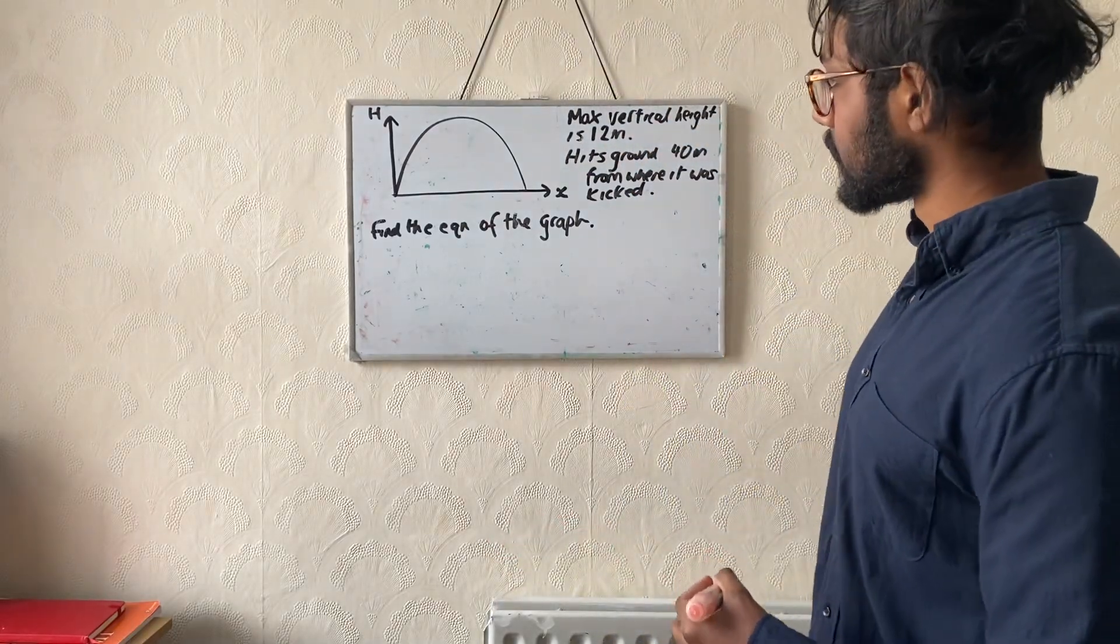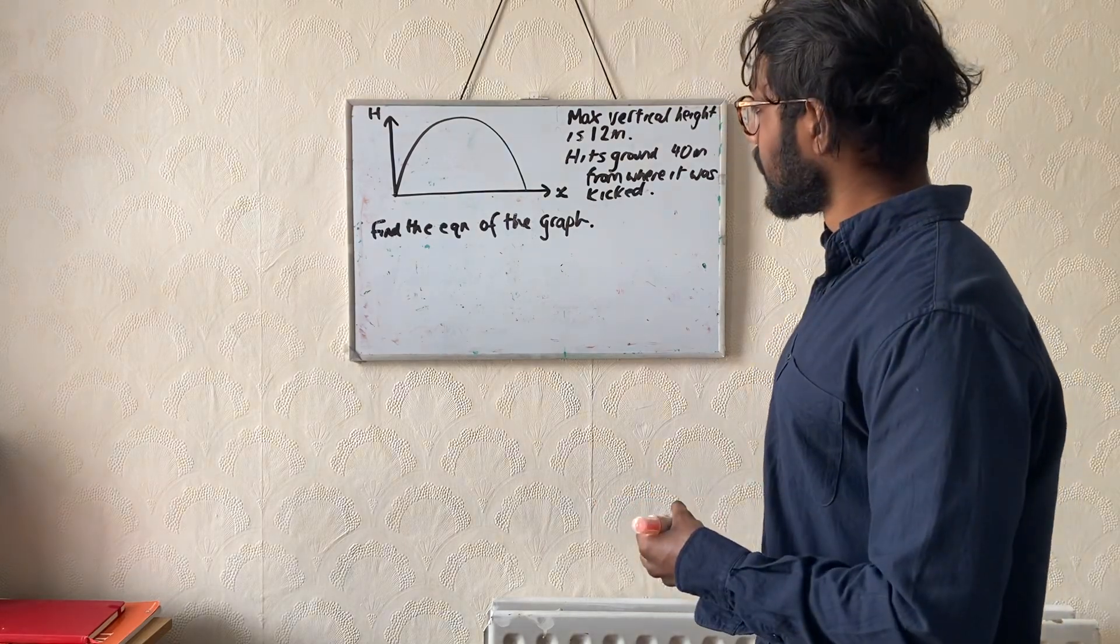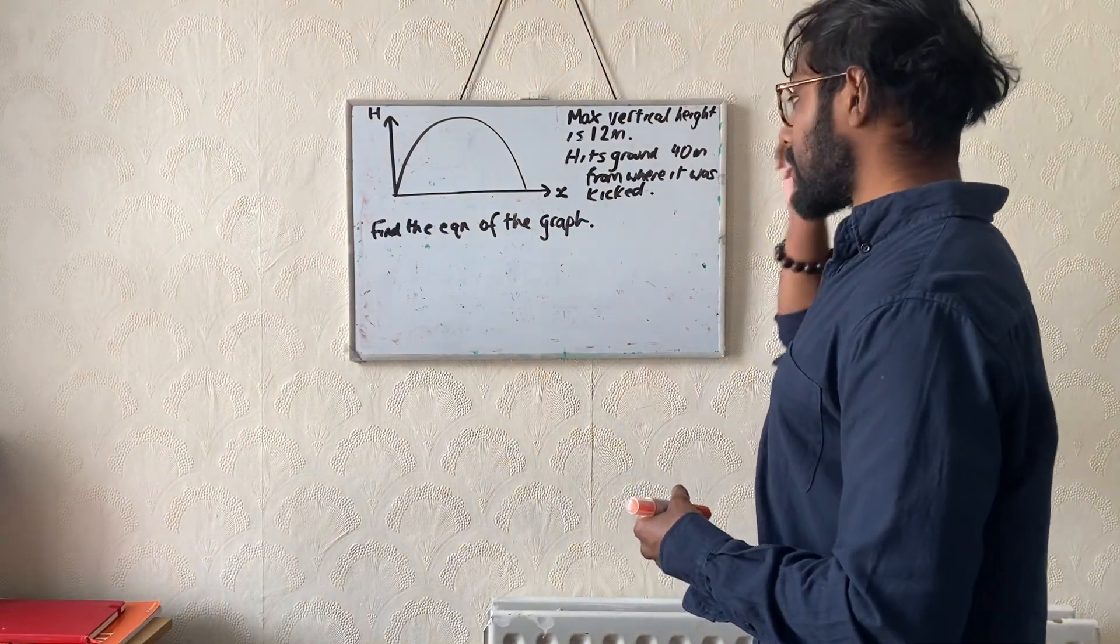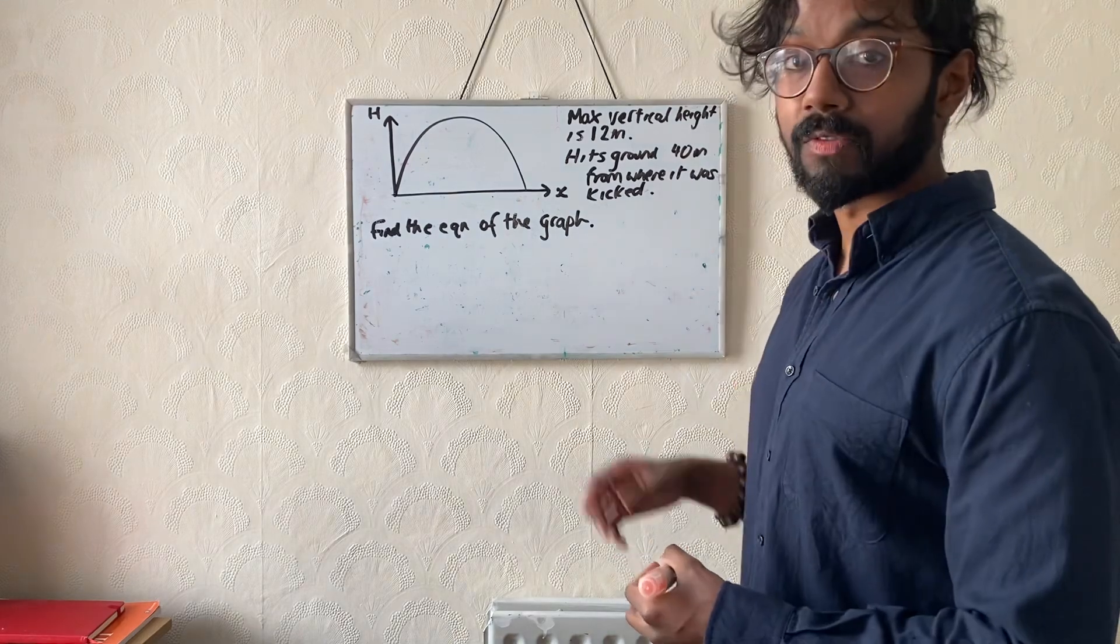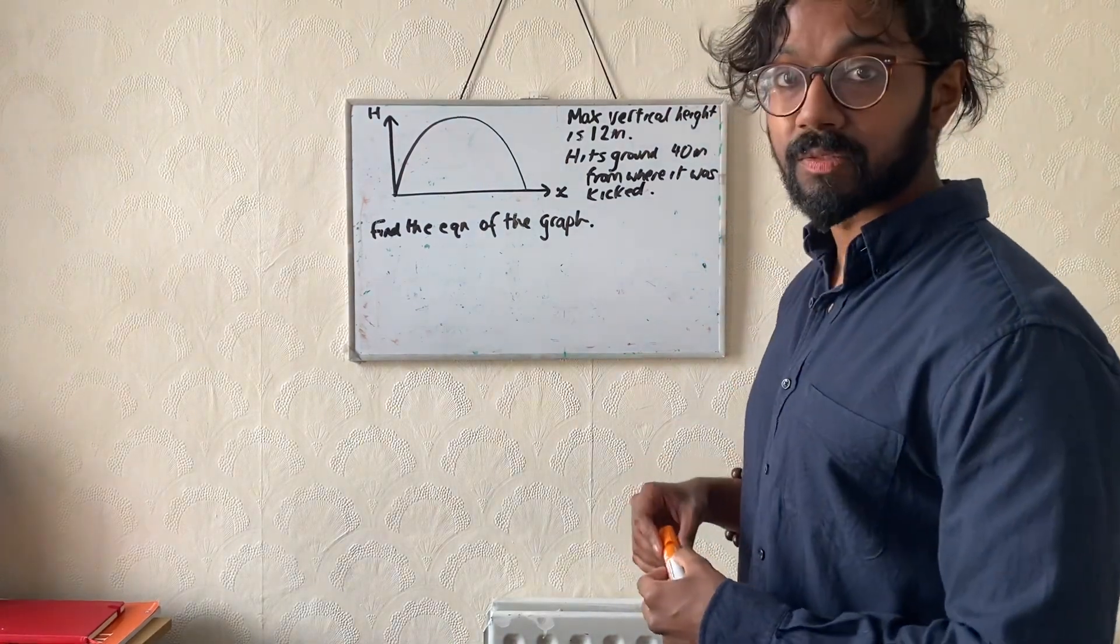We have a question from a student. It's a quadratic modelling problem from an A-level maths paper. The question states that a rugby ball is kicked and it reaches a maximum vertical height of 12 metres and hits horizontal ground 40 metres from where it was kicked.